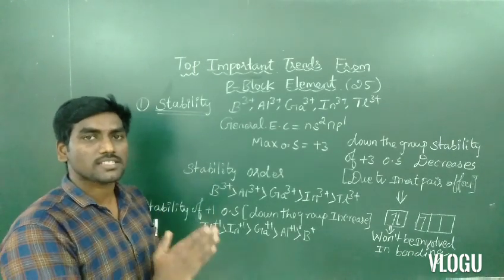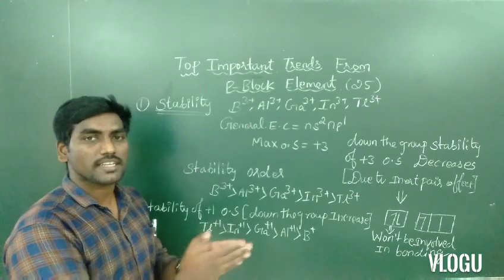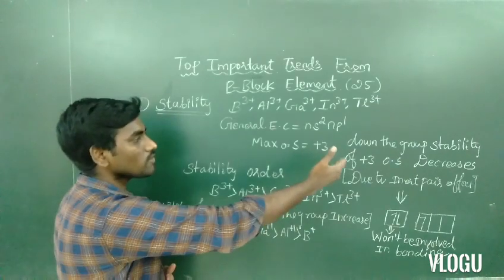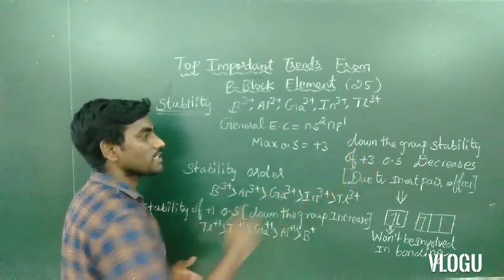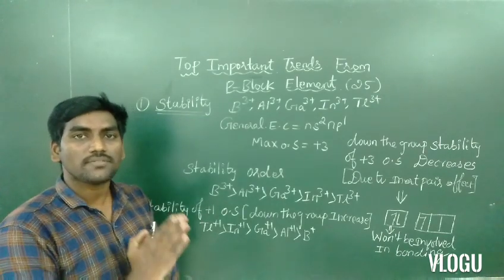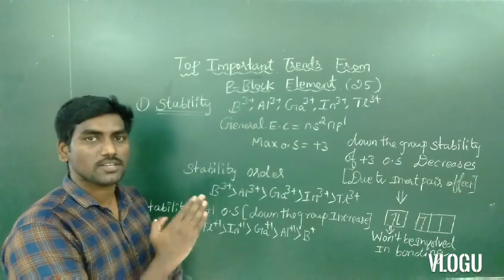So down the group, plus 3 oxidation state, the stability will decrease. Down the group, the stability of plus 3 oxidation state decreases due to inner pair effect. Inner pair effect, plus 3 oxidation state will decrease.